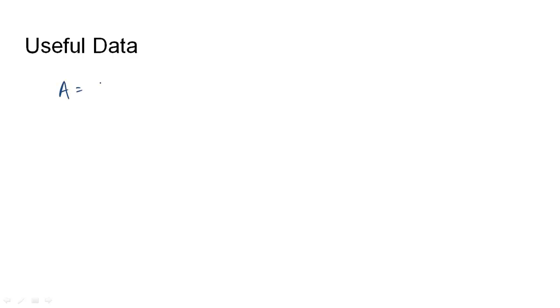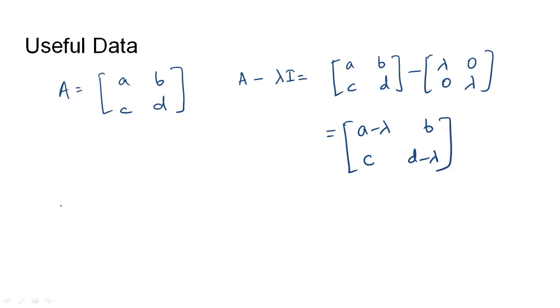If we are given a matrix A whose elements are a, b, c, and d, and we need to find its eigenvalues, we find the matrix A minus lambda I. That would be [a, b; c, d] minus [lambda, 0; 0, lambda], which becomes [a - lambda, b; c, d - lambda]. Once this matrix is found, the determinant is made equal to zero, giving us the characteristic equation for matrix A. The roots of this characteristic equation are called the eigenvalues for matrix A.